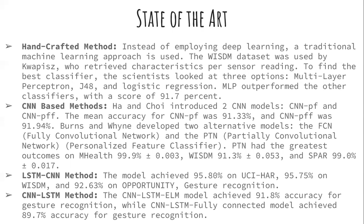Similarly, in CNN-based methods, researchers introduced two CNN models: CNN-PF and CNN-PFF, achieving accuracies of 91.33% and 91.4% respectively. Bruins and colleagues developed two alternate methods, FCN and PTN, achieving great results. The PTN achieved its greatest outcome on the M-Health dataset with 99.9% accuracy (±0.03%), and 99% accuracy on the Spare dataset.